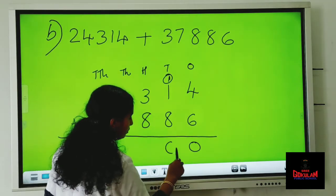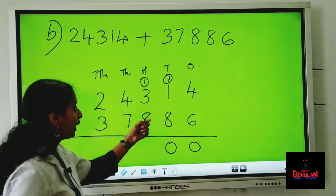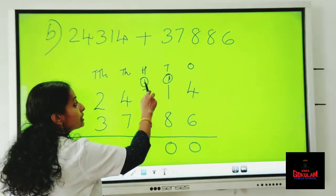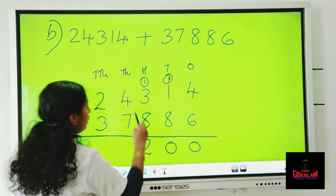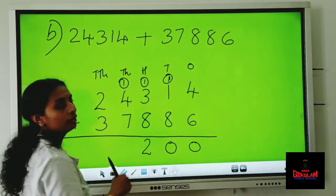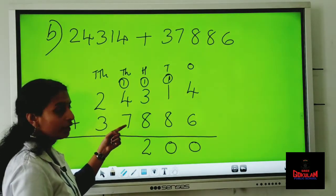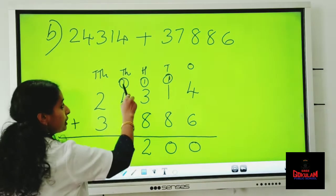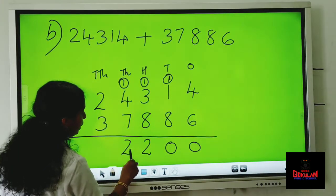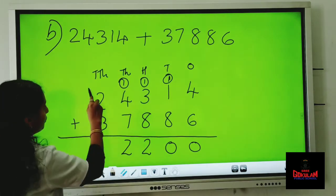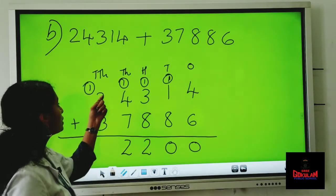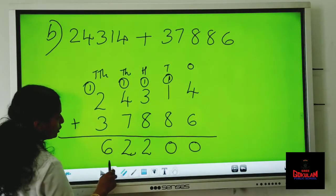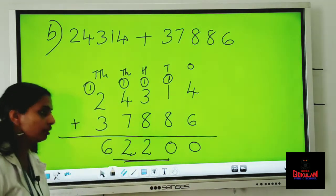Nine plus one is again ten — carryover one. And eight plus three: after eight, nine, ten, eleven. Eleven plus one is twelve and carry one. Here we have four and seven: after seven, eight, nine, ten, eleven. Eleven plus one is twelve, carry one. Then three plus two is five. Five plus one is six. So the sum is sixty-two thousand two hundred twenty-six.